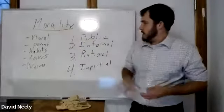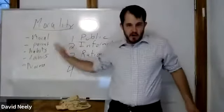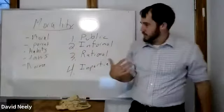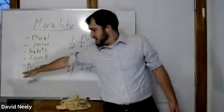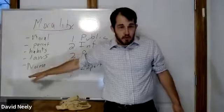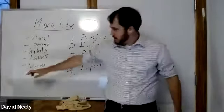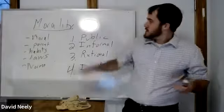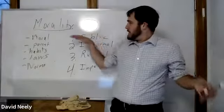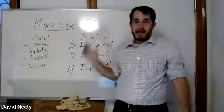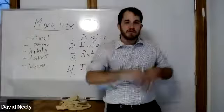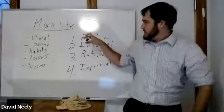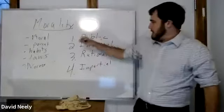A moral rule is public — some of the other types of rules are as well. Laws are public, written down for everyone to read. Norms are also generally public — you know what you're supposed to do on a subway. So public means these are rules that everybody knows, or at least everyone should know.